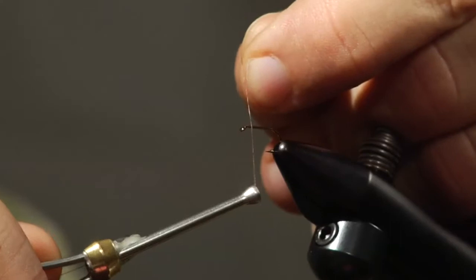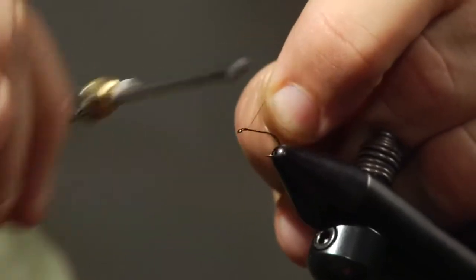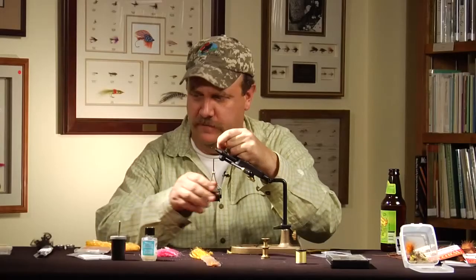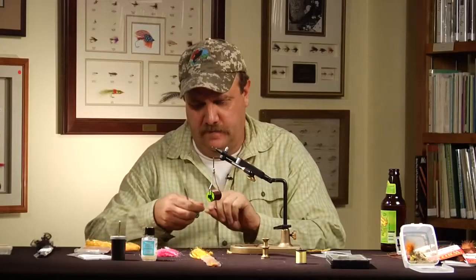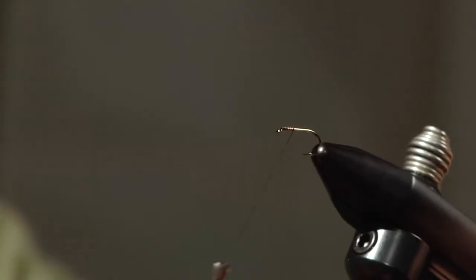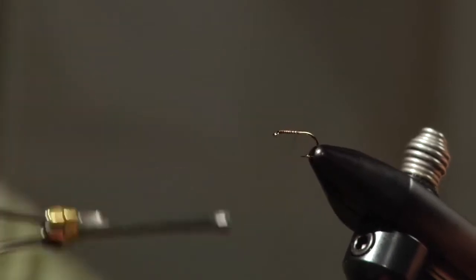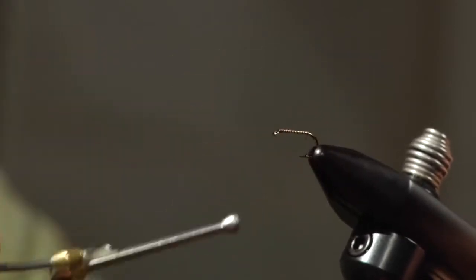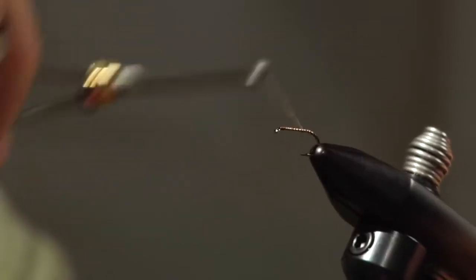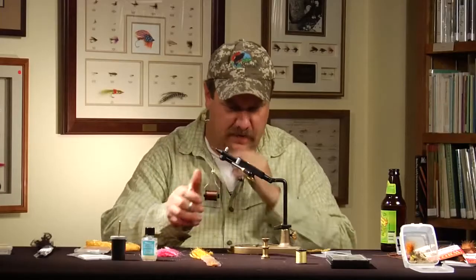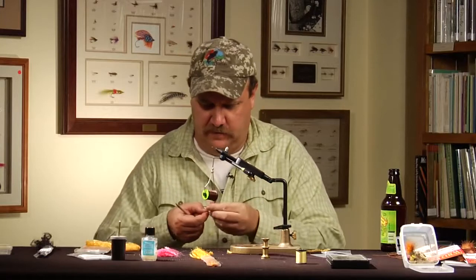I'm going to tie my black parachute ant now. This is an unwinged version. I fish the winged versions when there's flying ants around, and the rest of the time I'll usually fish one that doesn't have a wing on it because there's always ants around, and trout love ants.